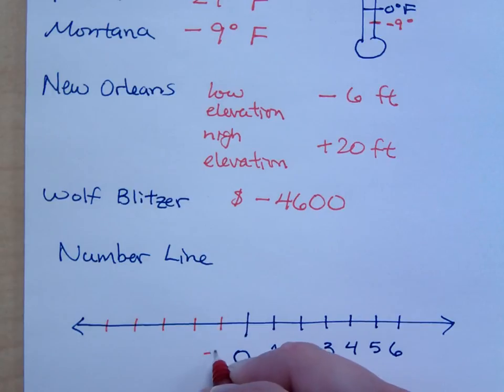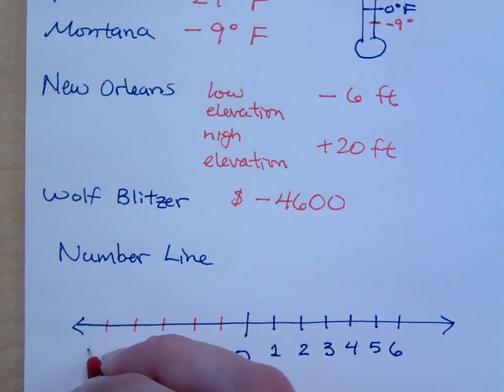We'll have numbers like this: negative 1, negative 2, negative 3, and so on.